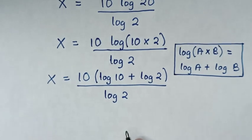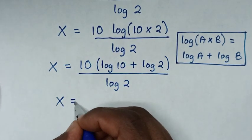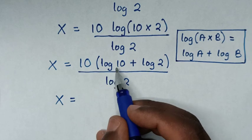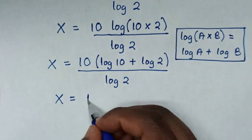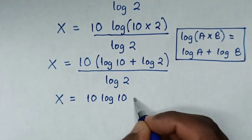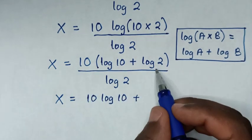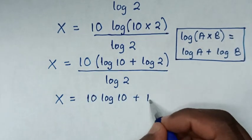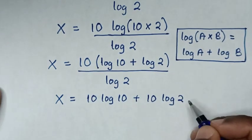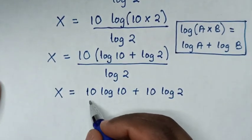Then in the next step it will be x is equal to 10, then log of 10 over log of 2 plus log of 2 over log of 2. We divide both parts by log of 2.